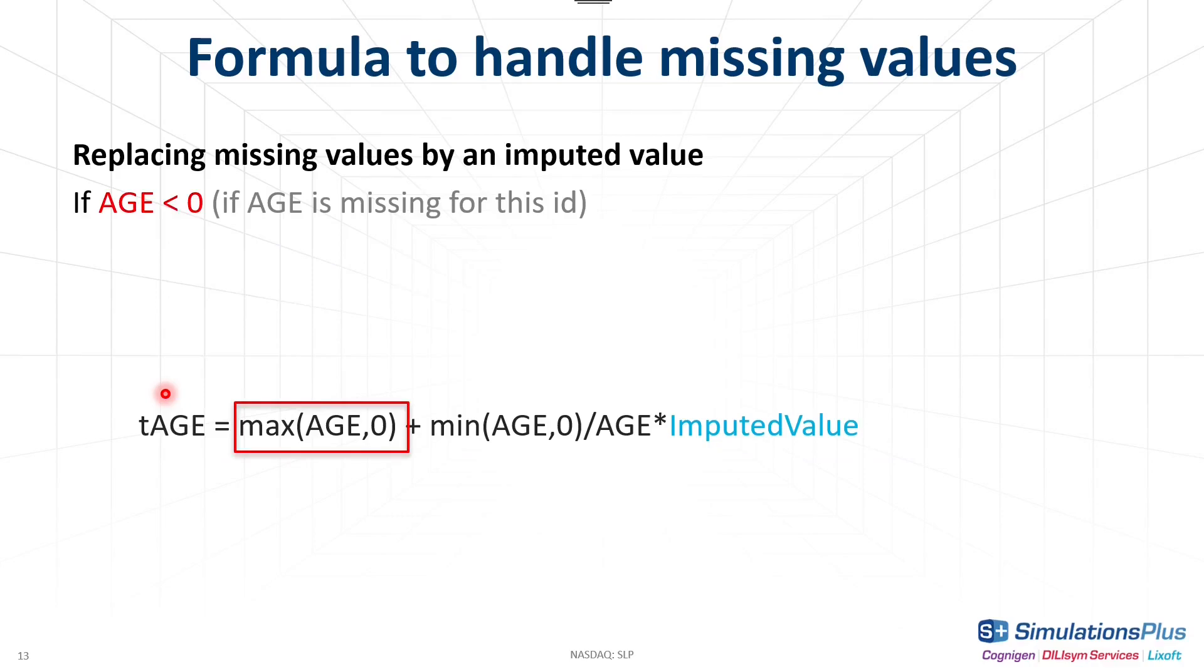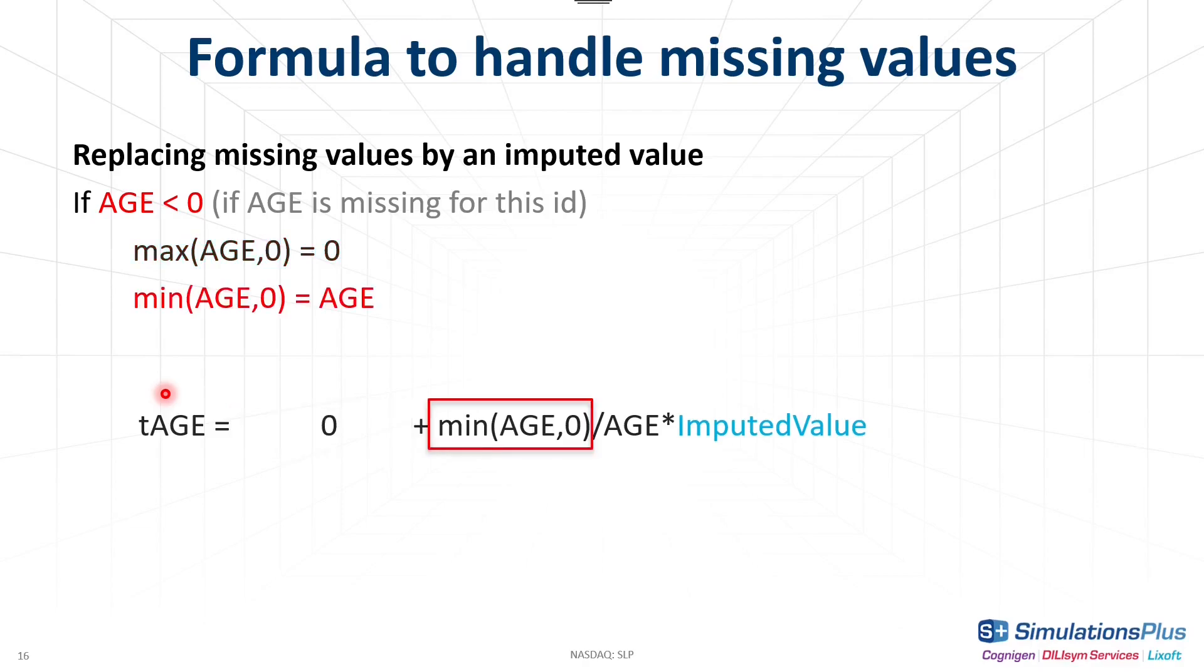When the age value is missing, age is negative, so max of age and zero is zero. And the mean of age and zero is age, so the whole formula is equal to the imputed value.